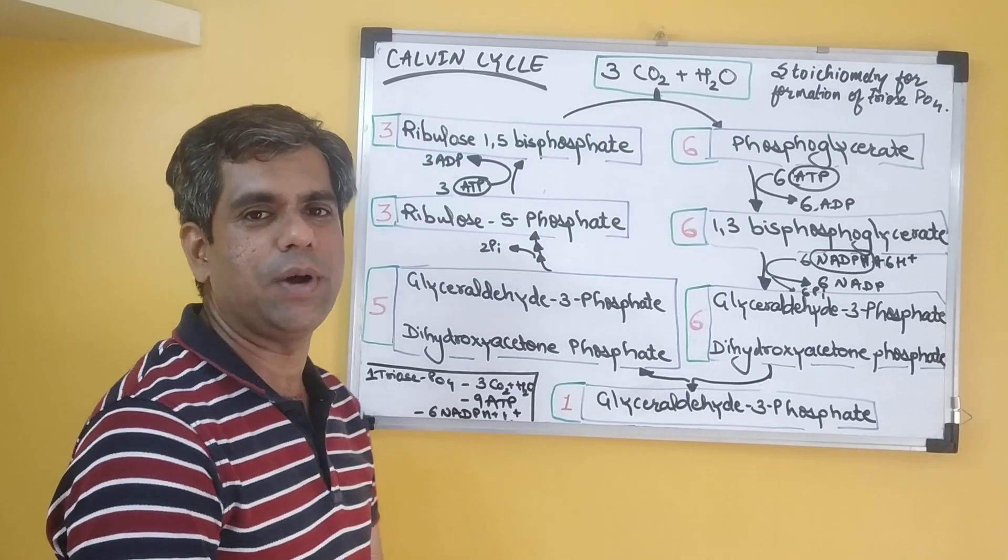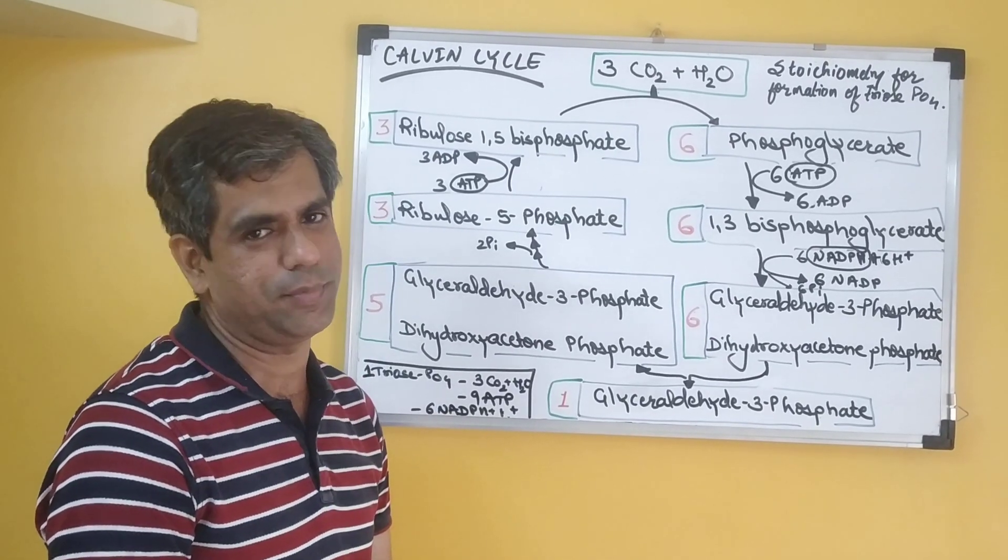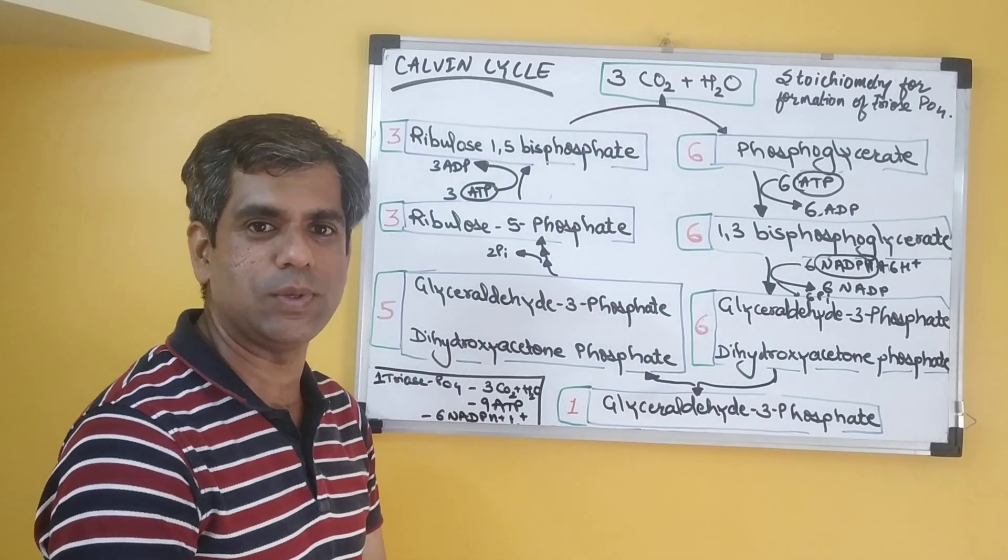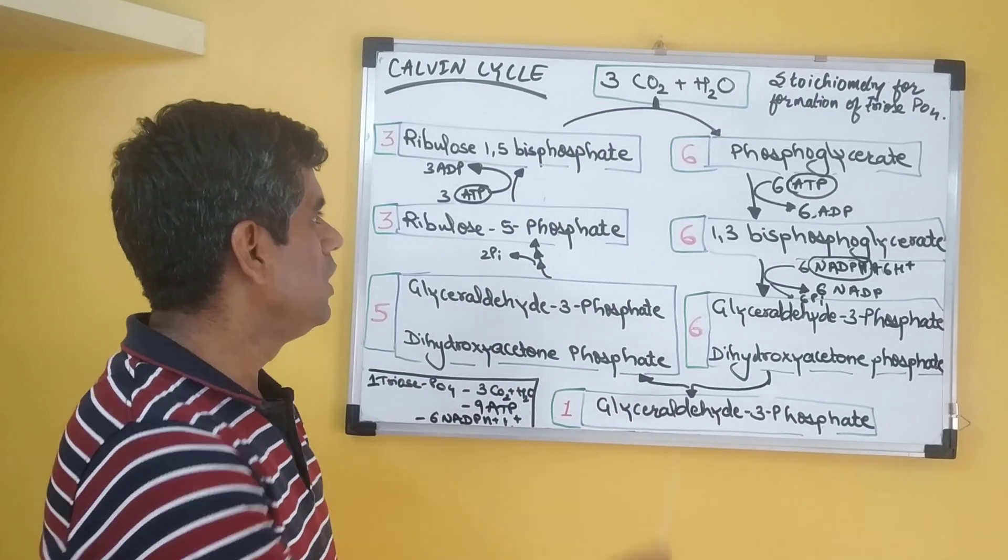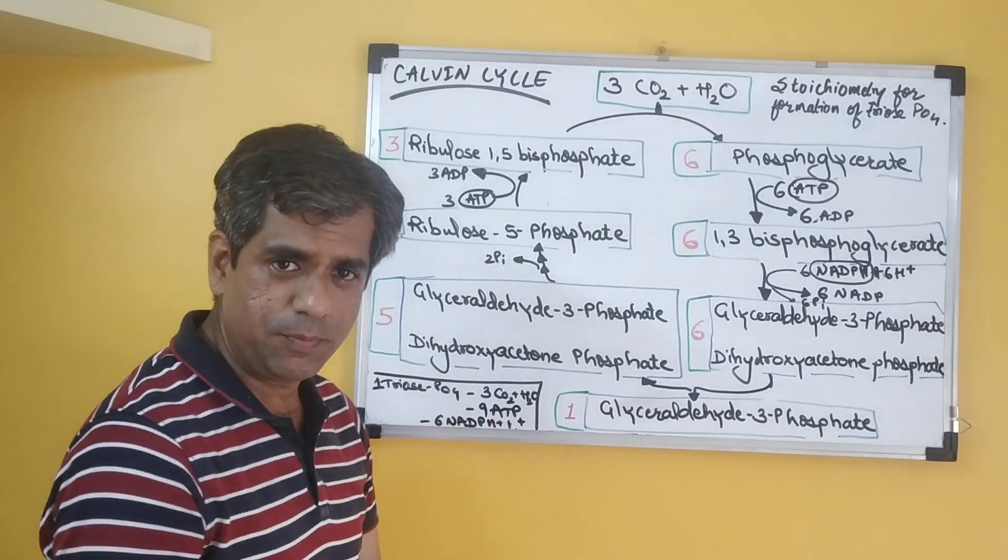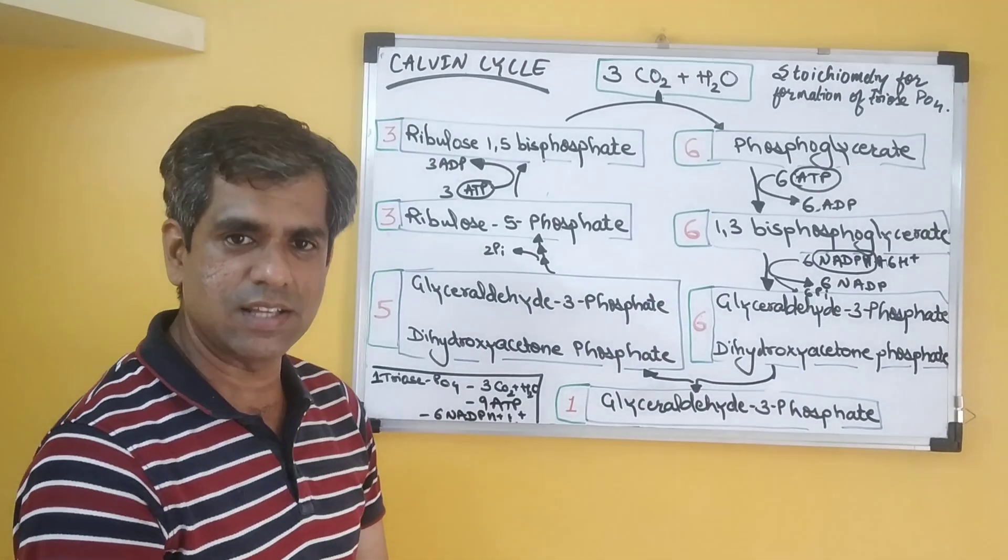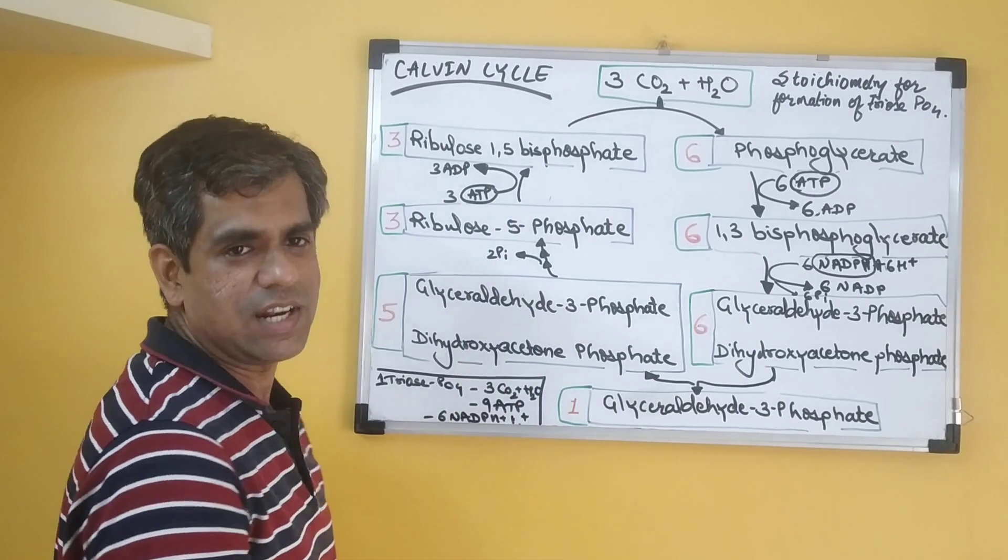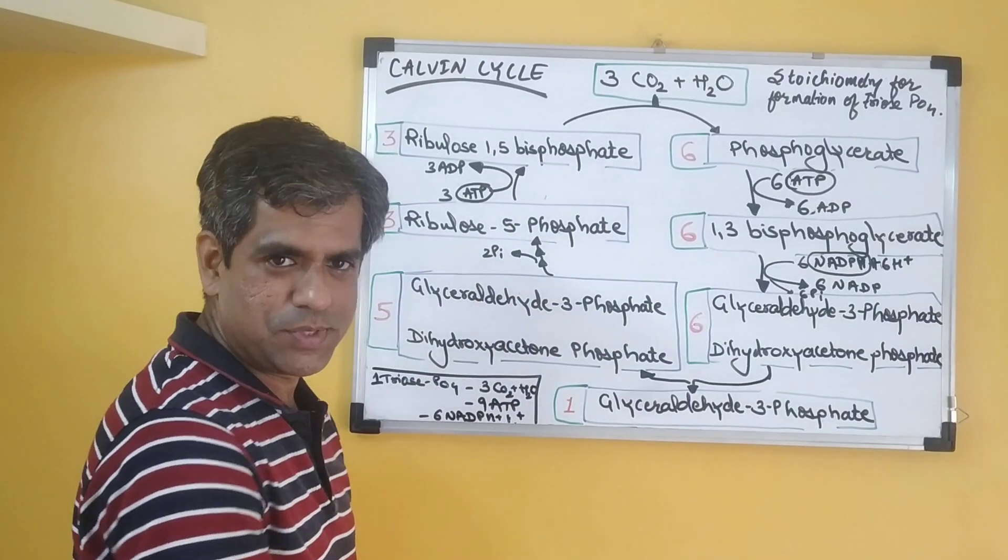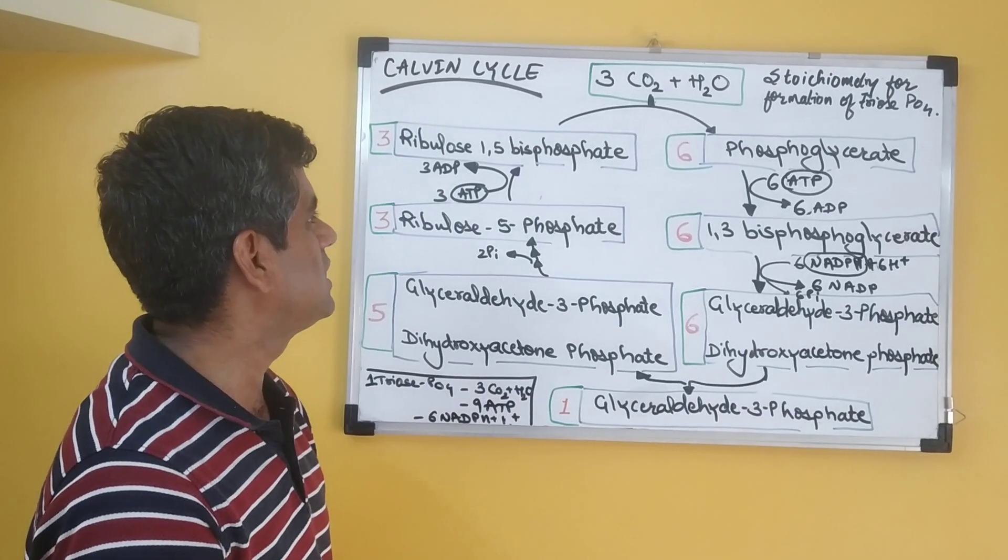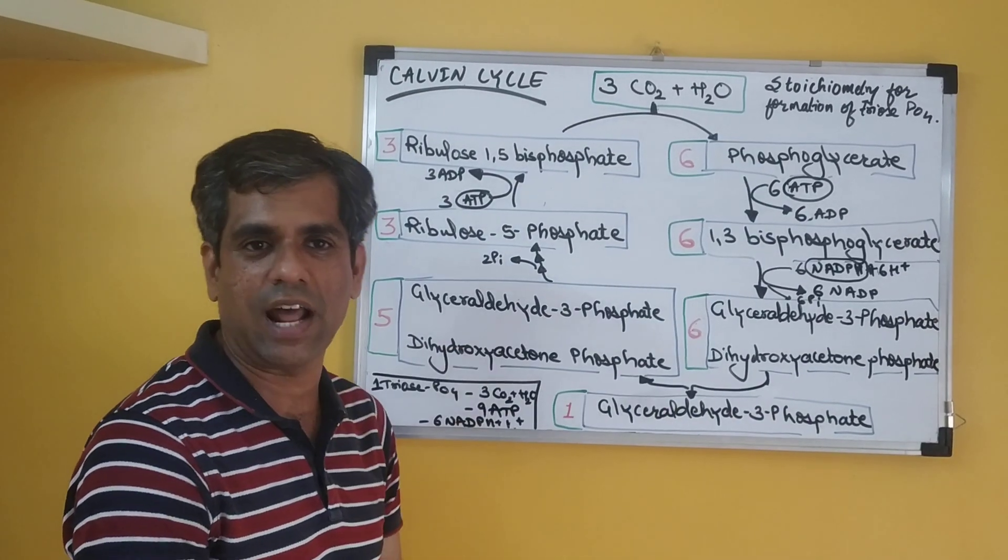We know that this is the part of the dark reaction of the typical photosynthesis. We have studied that the entire process takes place in three steps, which we know is first step of carboxylation, the second step is of reduction and synthesis, and the third step is of regeneration. We will not be focusing on the steps here, but we will be focusing on the stoichiometry of the entire Calvin cycle for formation of a typical triose phosphate.